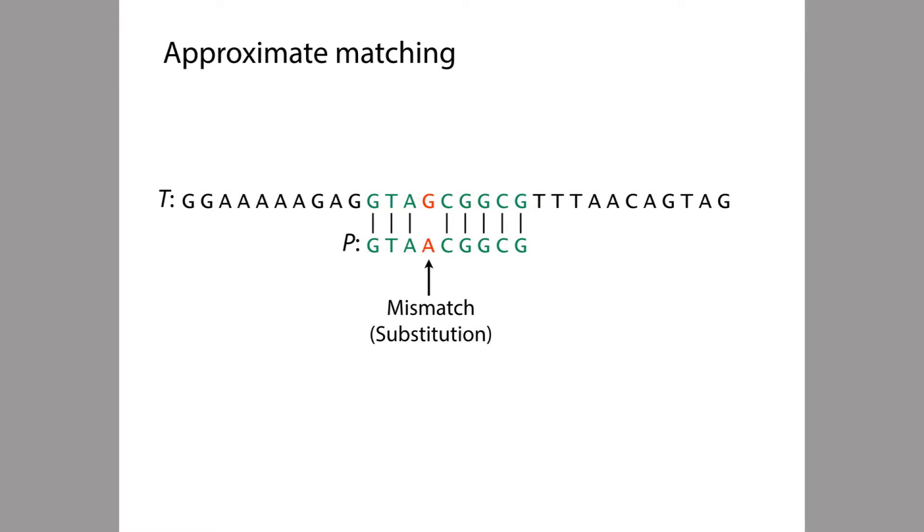So algorithms for exact matching are not going to be sufficient. We need algorithms that can do approximate matching, allowing for differences between the pattern and the text. So what kinds of differences might we encounter? Here's an example. Here's an alignment of P to T. In this alignment we see one difference, and this particular kind of difference is called a mismatch or a substitution.